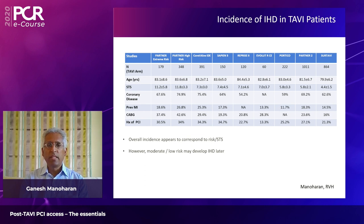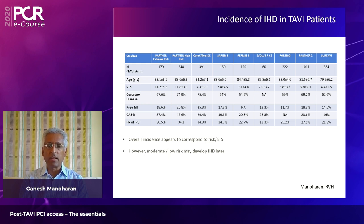The incidence of ischemic heart disease in TAVI patients is wide but generally in the range of 50 to 60 percent depending on the studies, and they generally tend to follow the STS score or the risk of the patient. However, remember that in moderate to low risk patients they may develop ischemic heart disease at a later stage, so trying to access the coronary arteries post-TAVI is important.